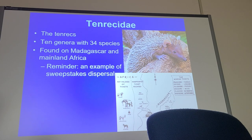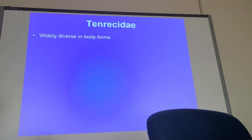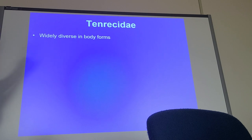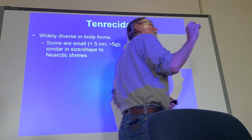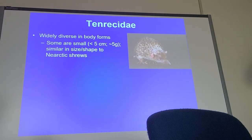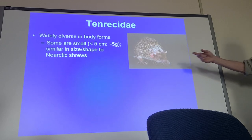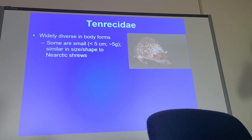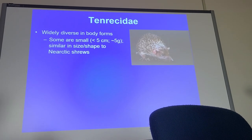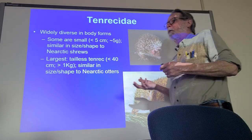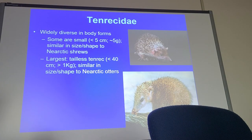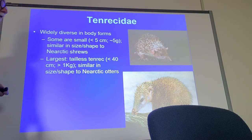The same adaptive radiation happened in the tenrecs too — there were many ecological niches available. As a result, you end up with widely diverse body forms. Some are really tiny — less than five centimeters and only five grams, very shrew-like. Others on Madagascar can be up to about the size of an otter. Those larger ones are semi-aquatic, feed on fish, and represent convergent evolution with true otters.